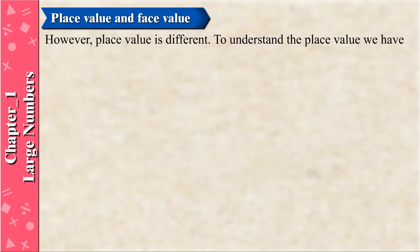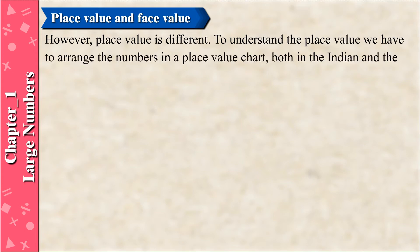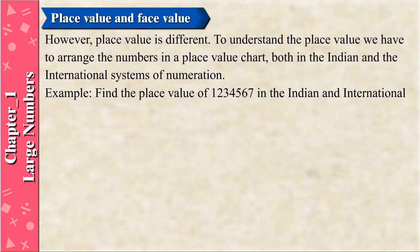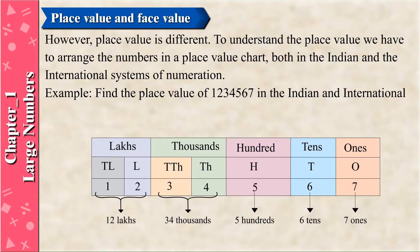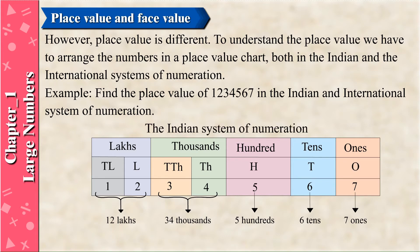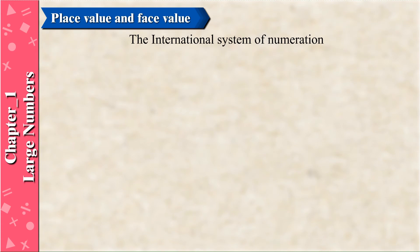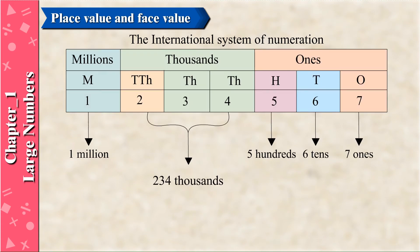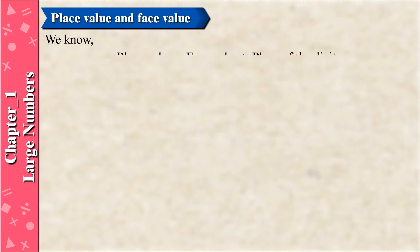However, place value is different. To understand the place value, we have to arrange the numbers in a place value chart, both in the Indian and the international systems of numeration. Example: find the place value of 12,34,567 in the Indian and international system of numeration. We know that place value is equal to face value multiplied by the place of the digit.